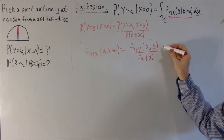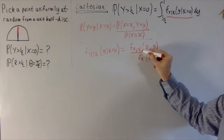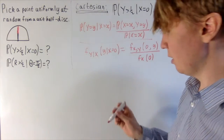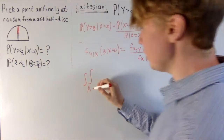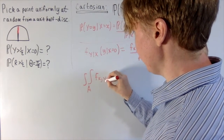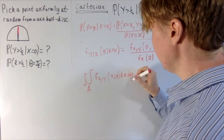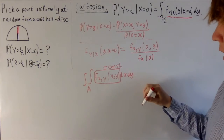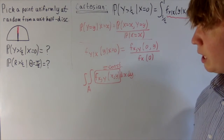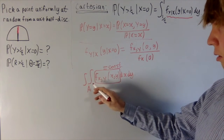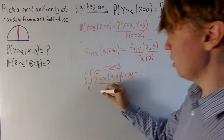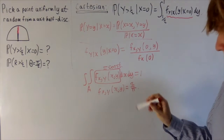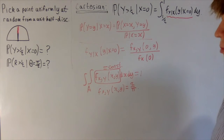We still have two things to calculate. For the joint density f(x, y): we know we're picking a point uniformly at random, so we have a uniform distribution on this unit half disk. If we call the region A, the integral of f(x, y) over A must equal some constant. The area of the half disk is pi r squared over 2, and with r equals 1, that's pi over 2. So for the integral to equal 1, f(x, y) must equal 2 over pi at every point.